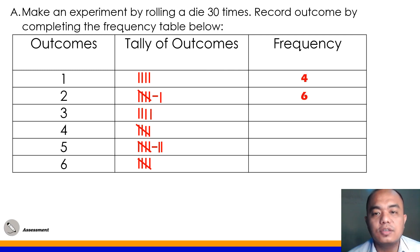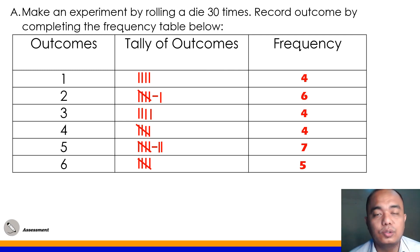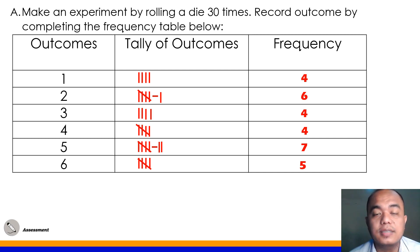The frequency for outcome 1 is 4. For outcome 2 it is 6. For 3 it is 4. Number 4 outcome is 4. Number 5 is 7. And number 6 is 5. That's how simple this activity is. Again, your result at home may vary from the sample result I show here on the screen.